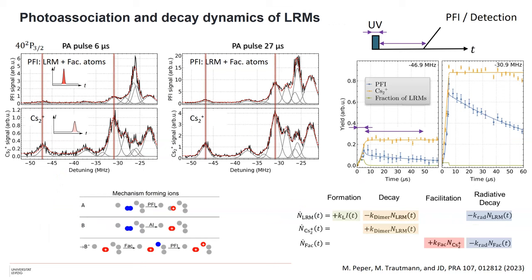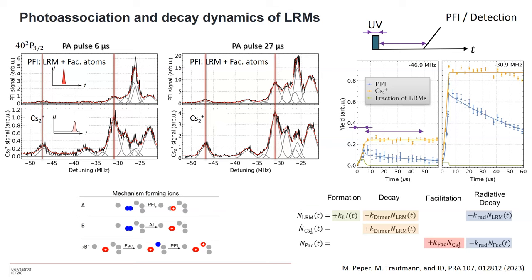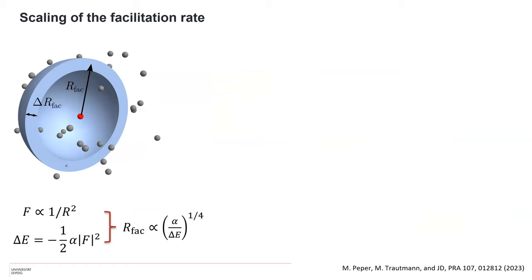We do a rate model for this by looking at these two resonances where we include all these mechanisms: formation of LRMs, critical decay to dimers, and a facilitation rate. With what probability this happens describes our dynamics quite well. This model allows us to extract the real fraction of long-range Rydberg molecules that is still there when we probe our system, when we detect. This is the green curve and you see it's almost nothing. There are no LRMs basically left although we have very nice signals. For any further prospects of doing something with LRMs, this is a bit of a problem. Anyway, there's interesting physics. We look at this facilitation rate, how it depends on the binding energy and the polarizability of the Rydberg state. It gives us a facilitation radius that depends on the polarizability and the binding energy of the long-range Rydberg molecule.